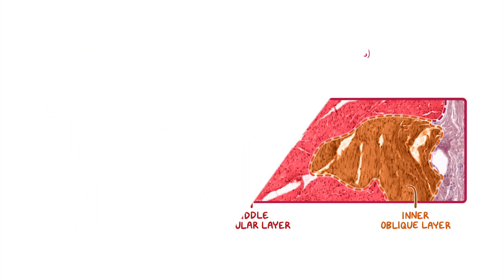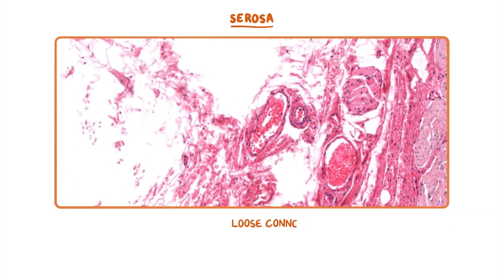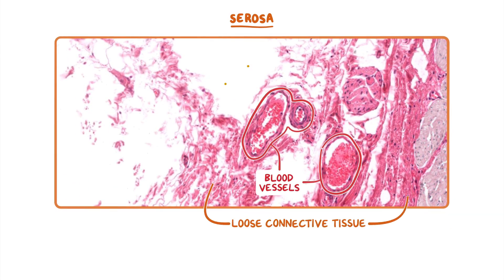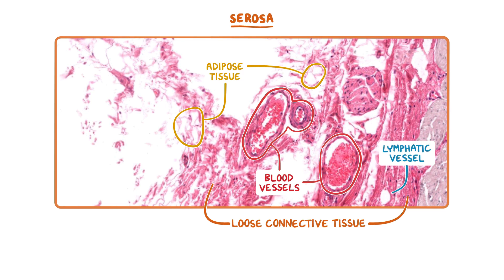The outermost layer of the cardiac stomach is the serosa, which consists of loose connective tissue with large blood vessels, adipose tissue, lymphatic vessels, and nerves. In this image, the large blood vessels are easy to identify because of the red blood cells visible within their lumens.